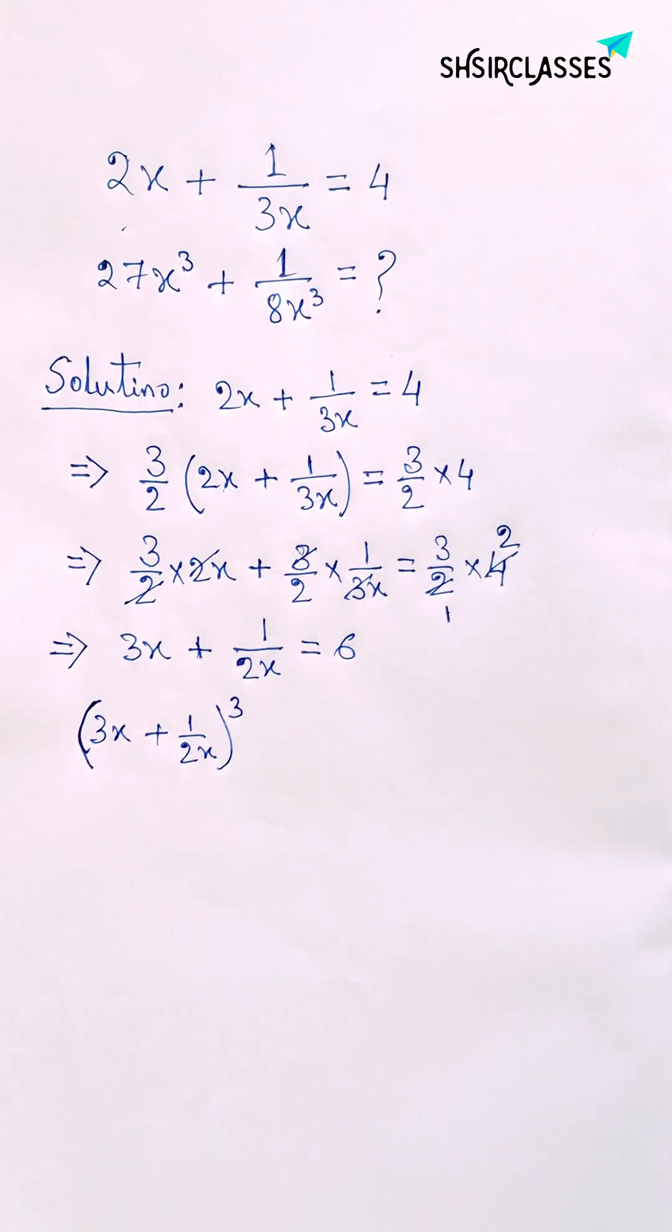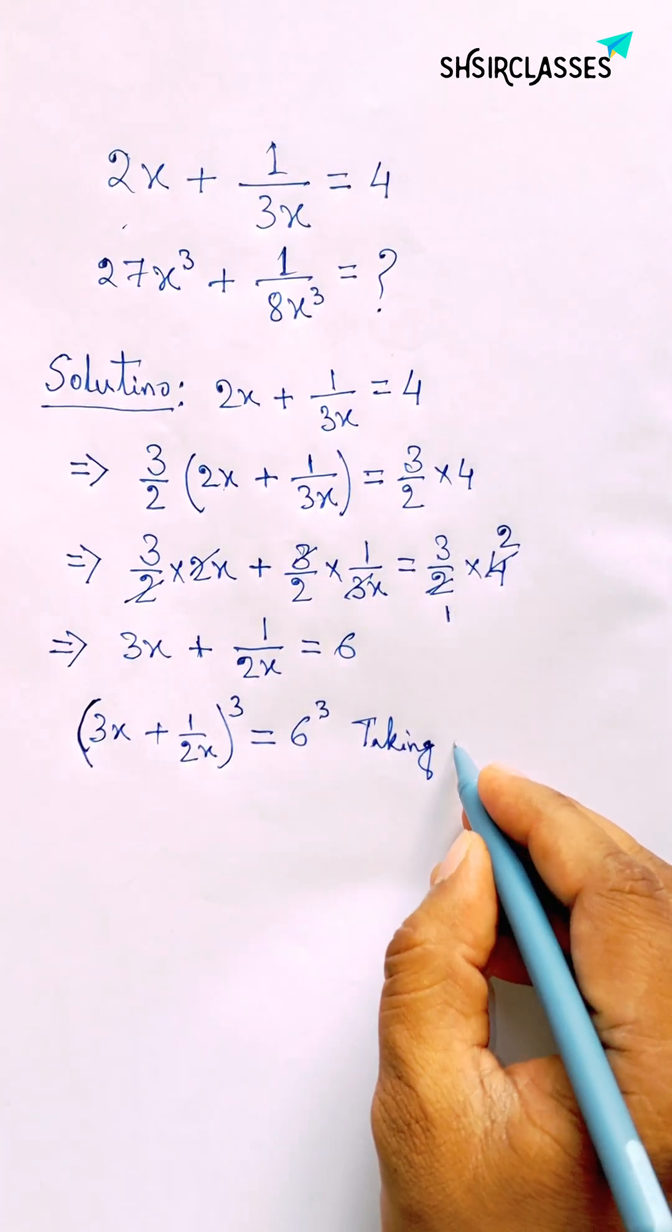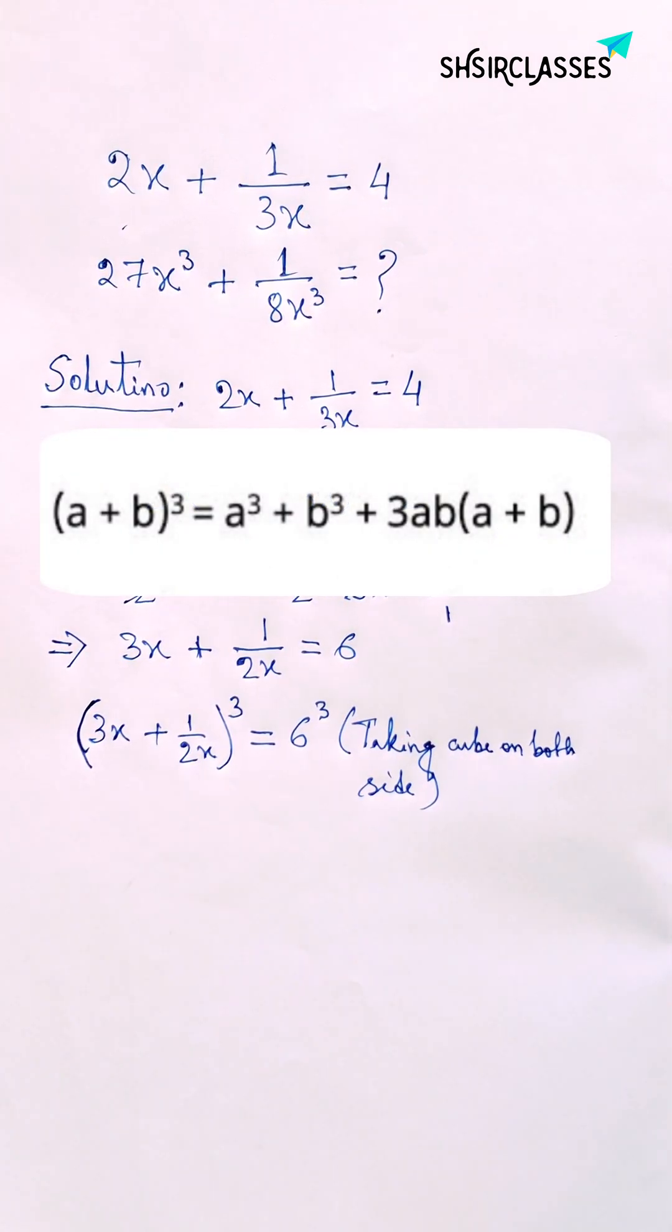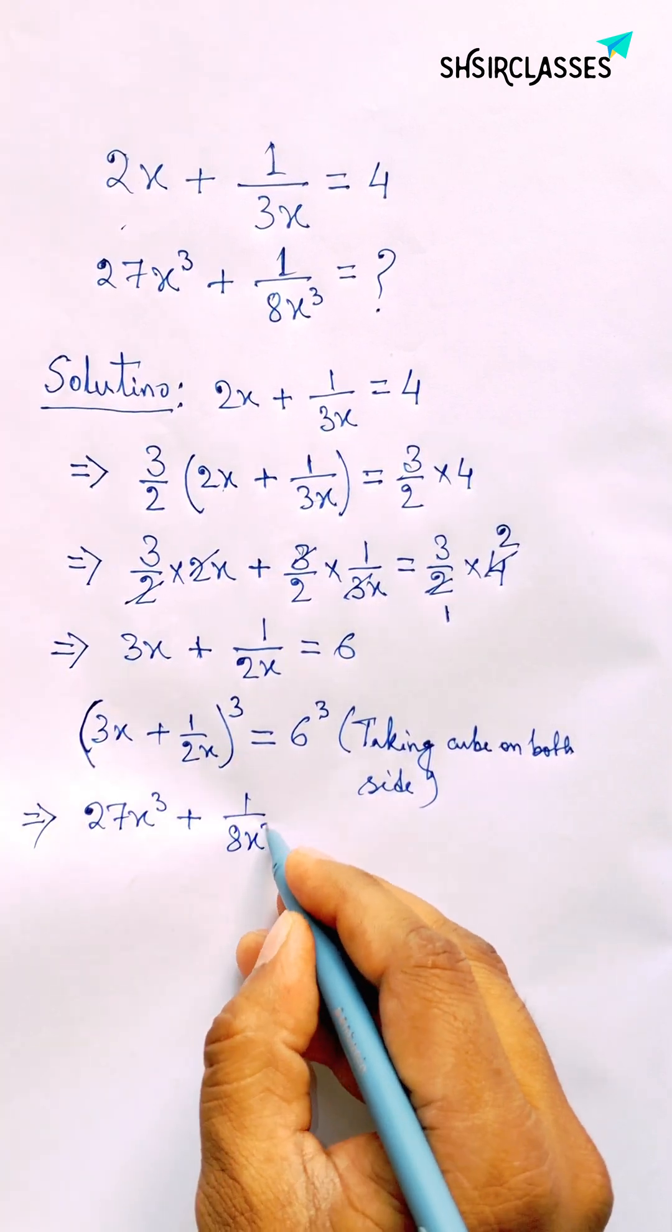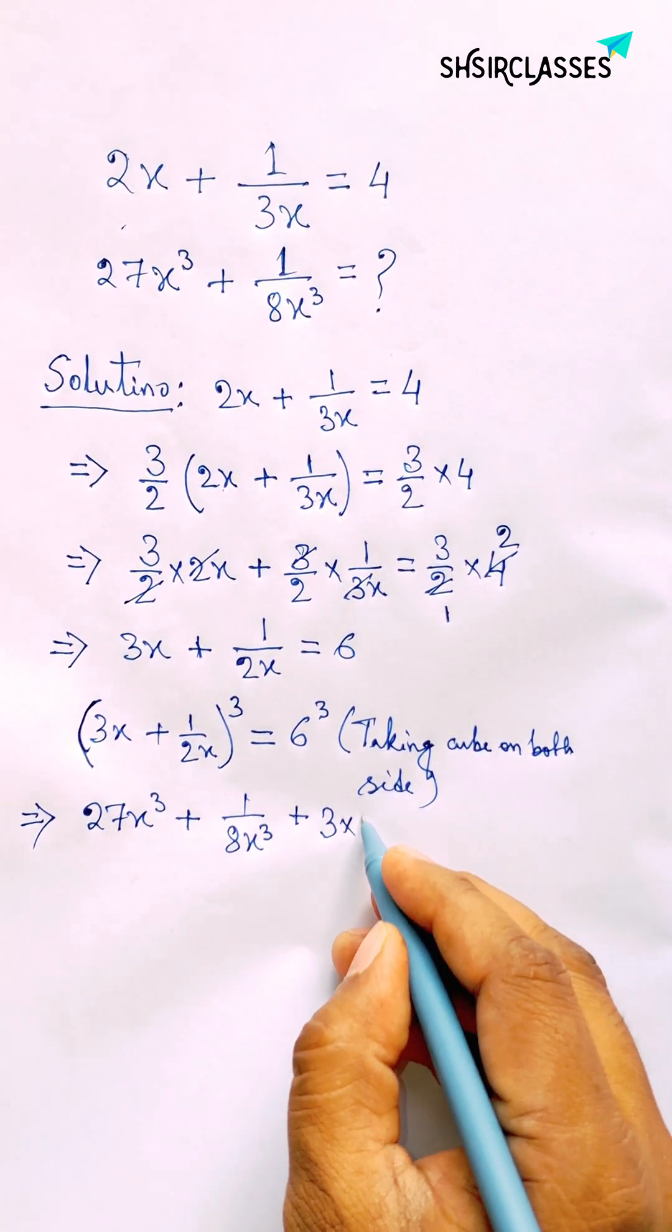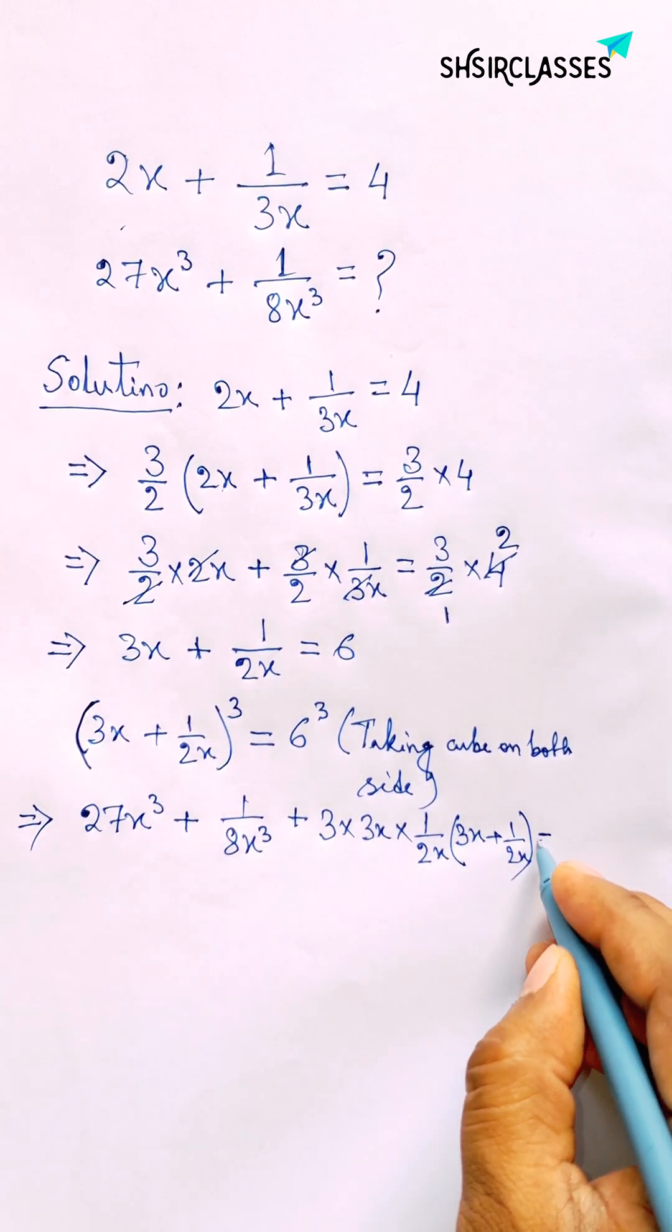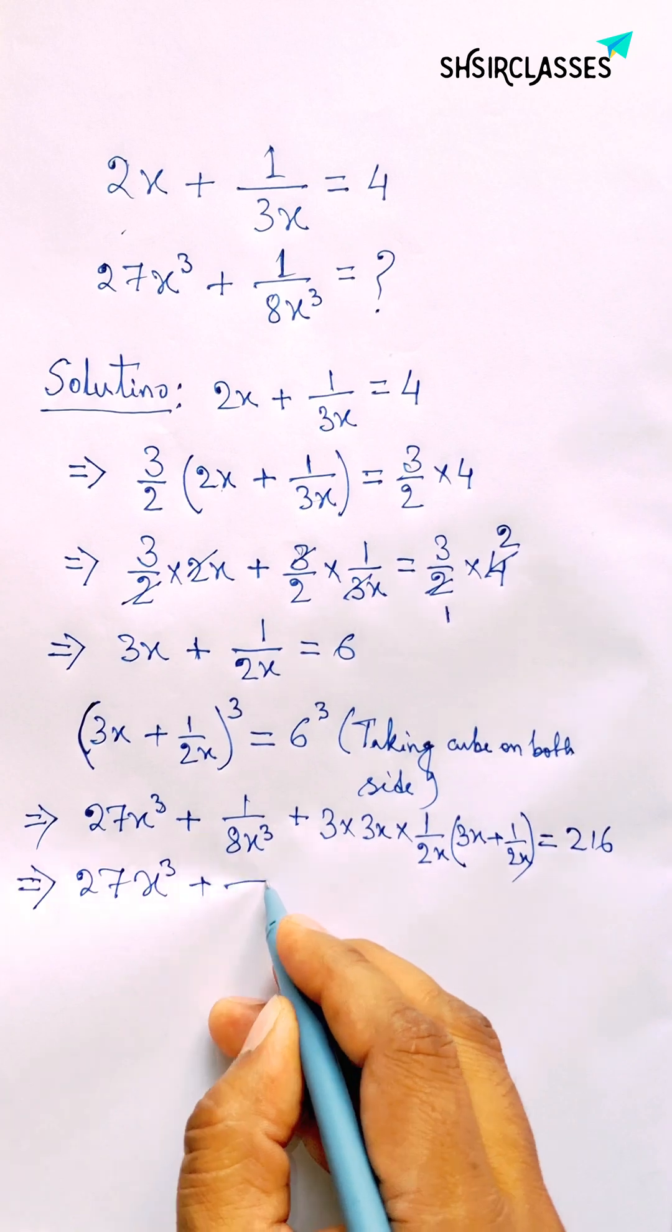Next, taking cube on both sides and applying the formula a plus b whole cube equals a cube plus b cube plus 3ab in first bracket a plus b. So here 27x cube plus 1 by 8x cube plus 3 times 3x into 1 by 2x in first bracket 3x plus 1 by 2x, and 6 cube equals 216.